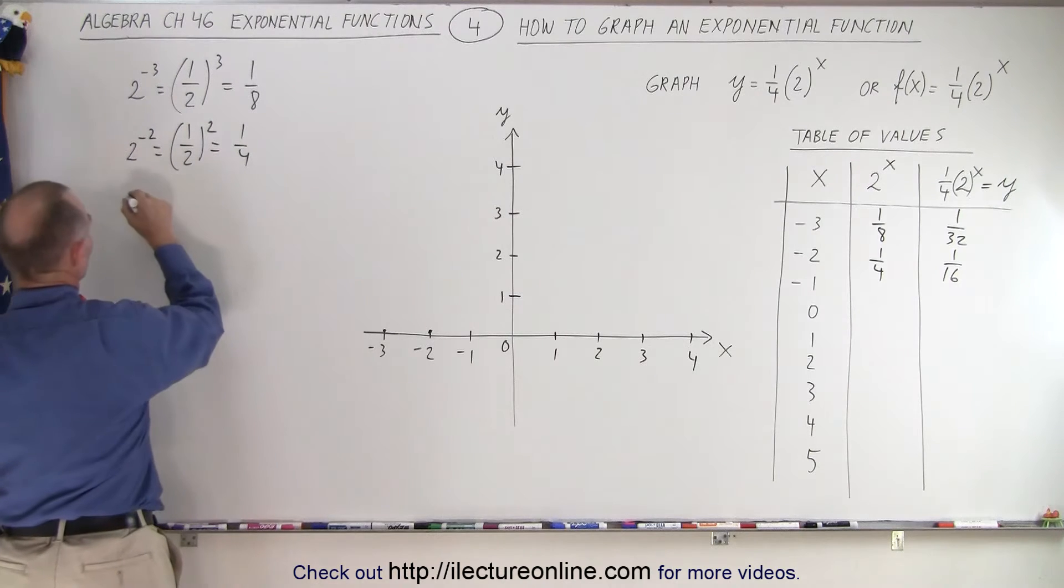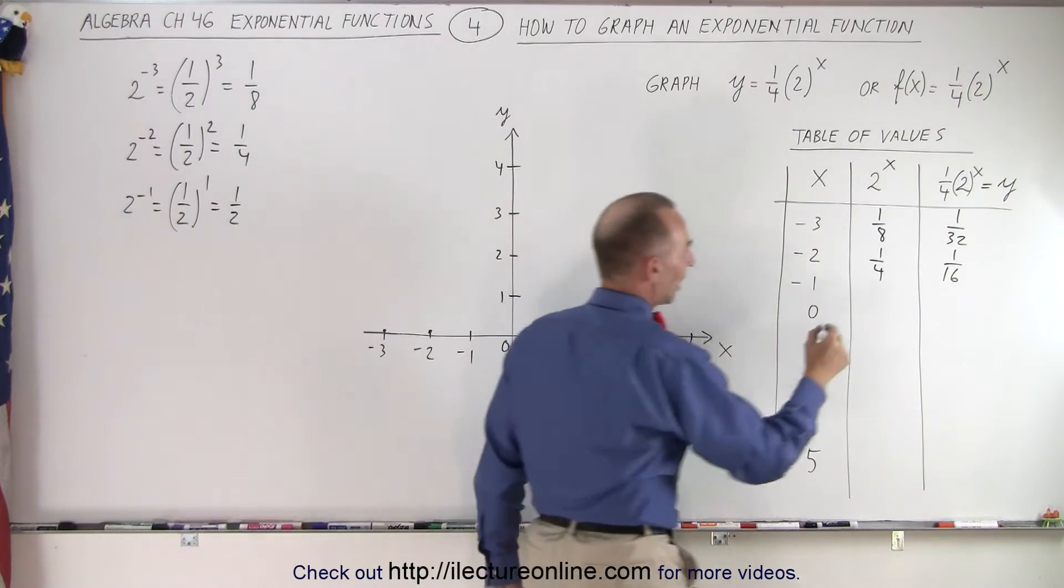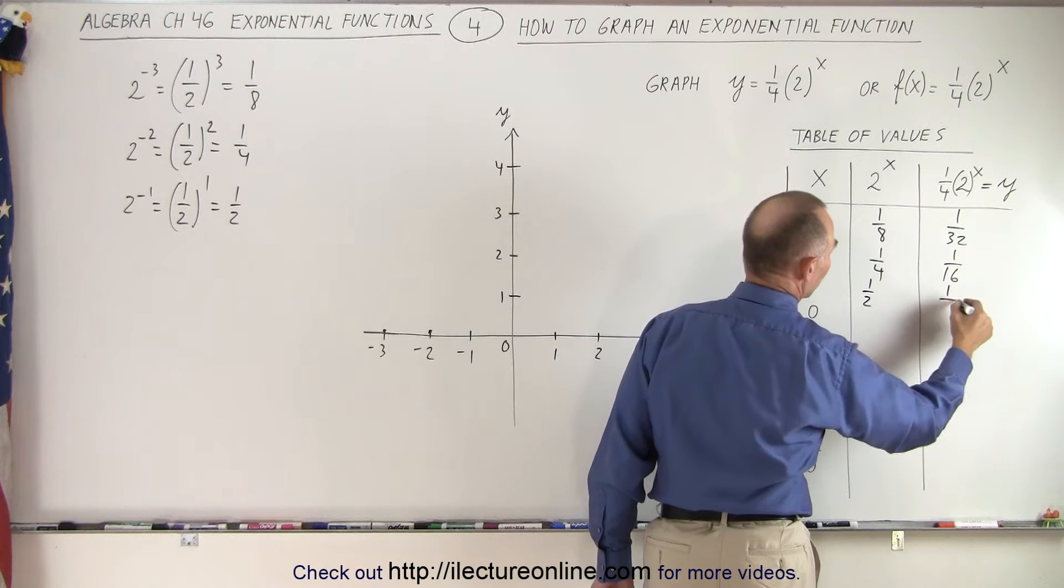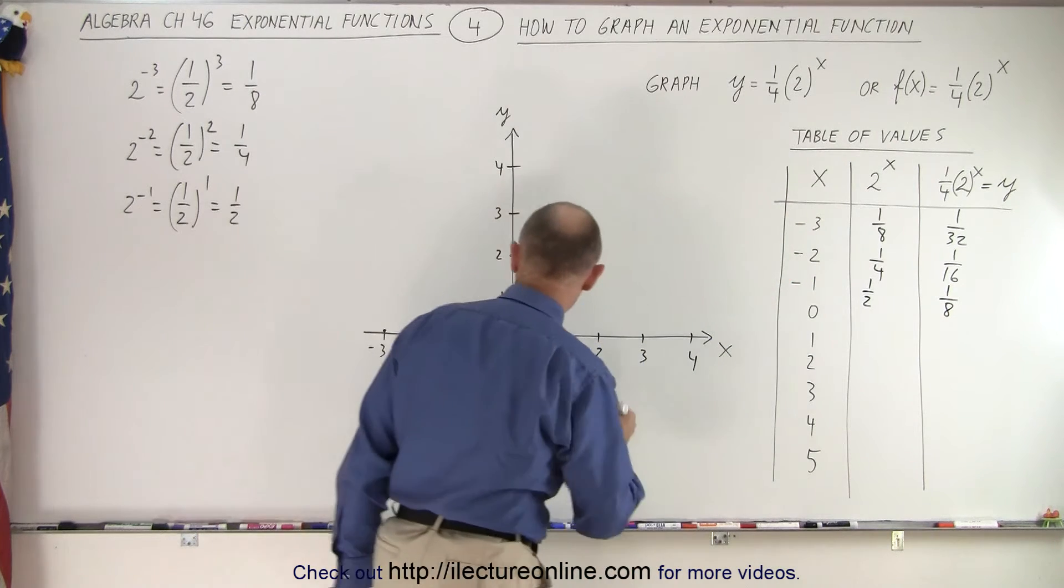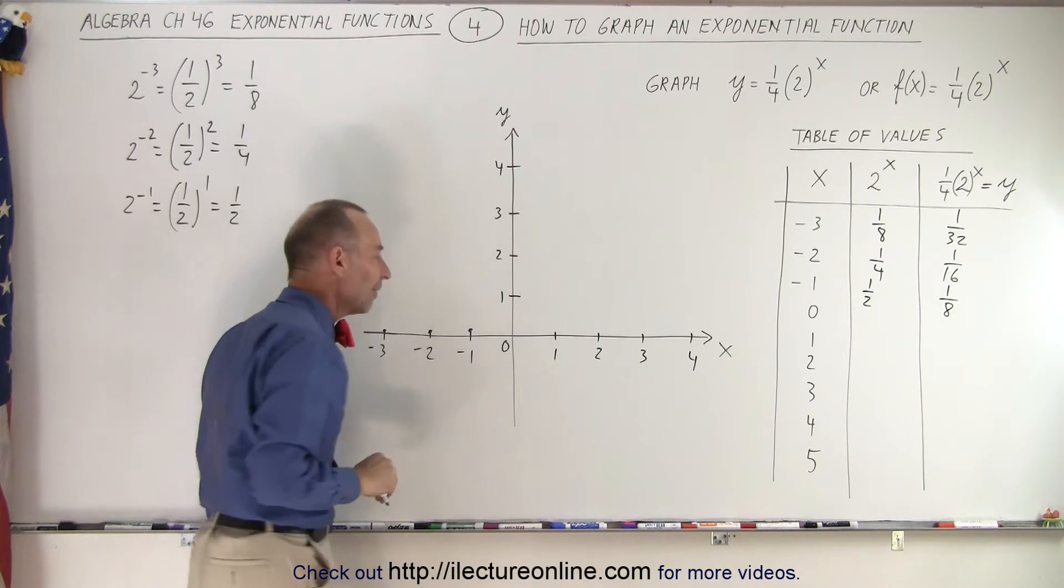How about negative 1? 2 to the negative 1 is equal to 1 over 2 to the 1 power, which is 1 half. So that's 1 half, and then we multiply times 1 over 4, which is 1 over 8. So now it gets to be a little bit bigger. It's right about there. You can see it's beginning to increase in value.